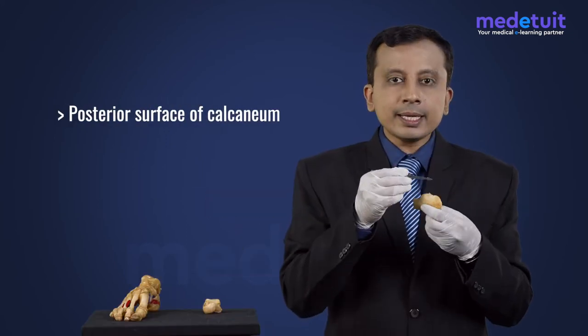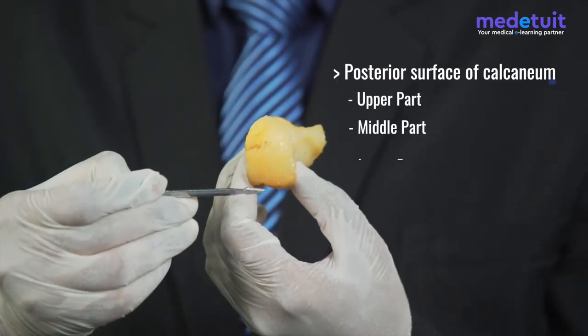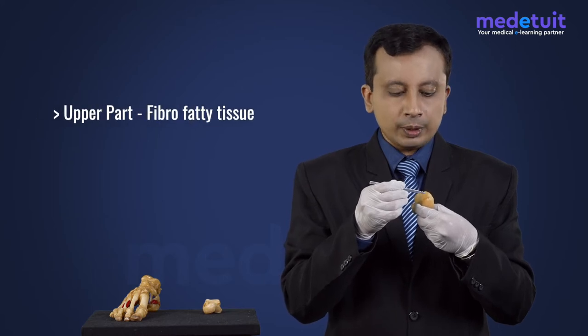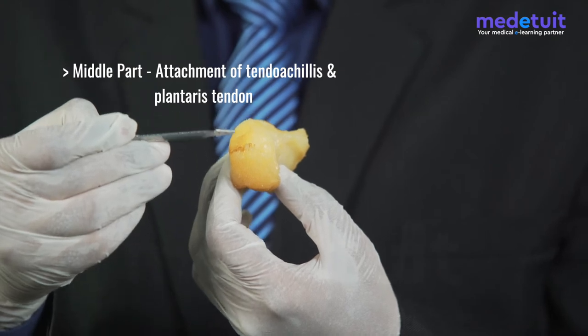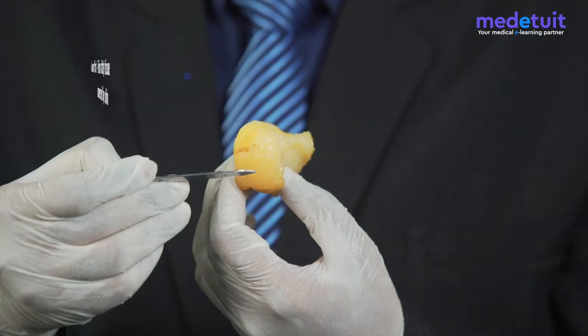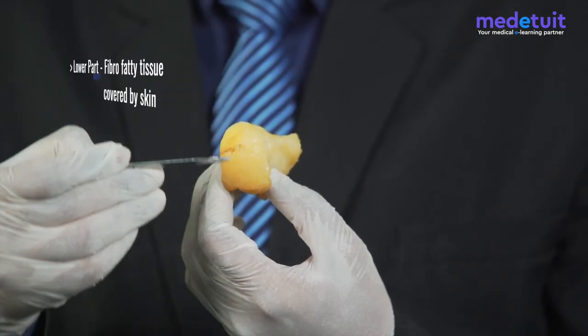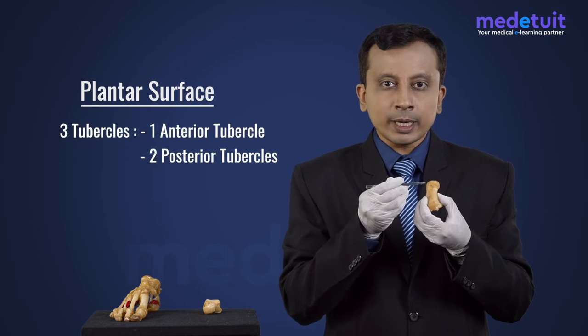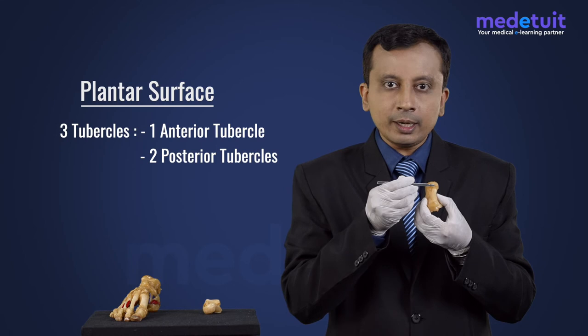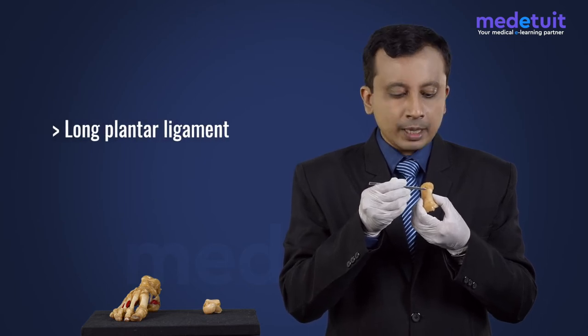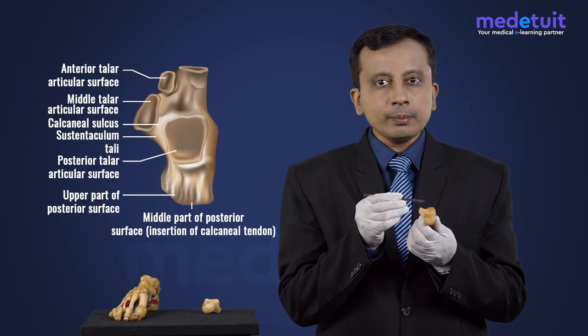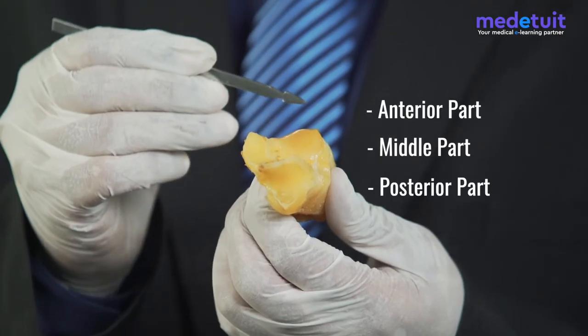The posterior surface of the calcaneum is divided into three parts: upper, middle, and lower. The upper part is related to fibro-fatty tissue. The middle part gives attachment to the tendo achilles along with the plantar tendon. The lower part is related to fibro-fatty tissue covered by skin, which helps with weight transmission from the bone to the ground. The plantar surface has three tubercles — an anterior tubercle and two posterior tubercles. Between these tubercles is a rough area giving attachment to the long plantar ligament. Anterior to the anterior tubercle is a rough area giving attachment to the short plantar ligament. The dorsal surface of the calcaneum has three parts: an anterior part, a middle part, and a posterior part.